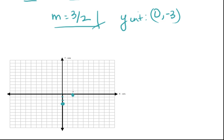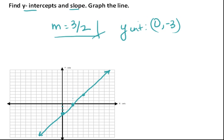Up 3, over 2. So we can draw a line straight, and that's the line described by that equation.